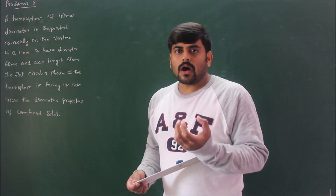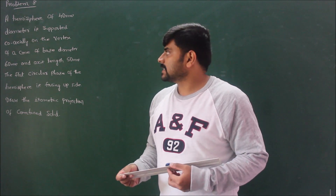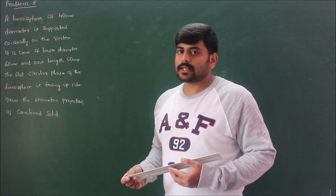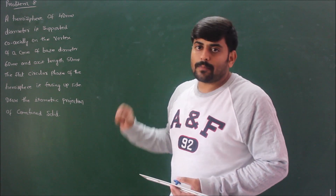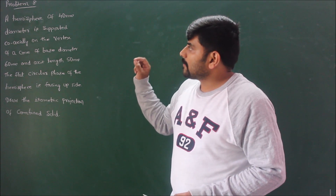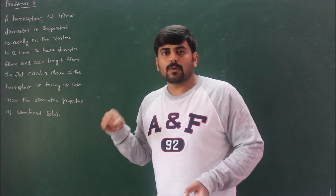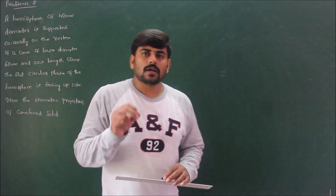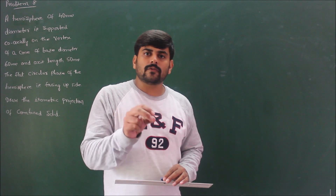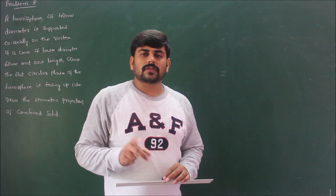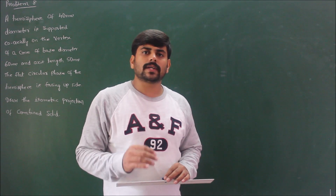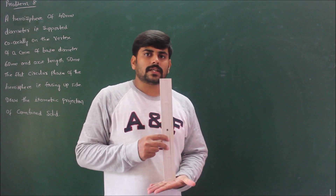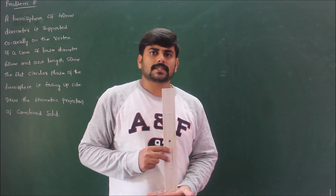We have a cone of base diameter 60 mm and axis length 50 mm. On the vertex of this cone we have a hemisphere of 40 mm diameter supported coaxially. First, draw the top view of this combined solid. Then extract the front view using the top view. Finally, with the help of the front view and top view, extract the isometric projection of the given combination of solids.